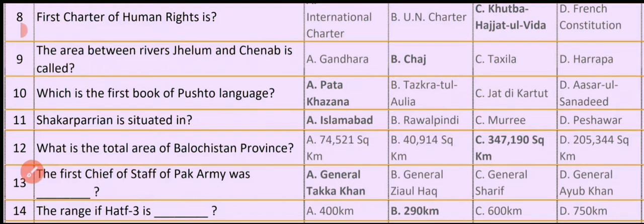Question No. 12. What is the total area of Balochistan province? Option A. 74,521 square kilometers Option B. 40,914 square kilometers Option C. 3,47,190 square kilometers Option D. 2,05,344 square kilometers. So the correct option is Option C: 3,47,190 square kilometers.